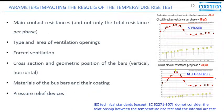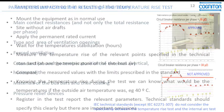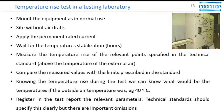Not only the total resistance per phase — which I will explain in a minute — but also the type and area of ventilation openings, whether there is forced ventilation or not, the cross-section and geometric position of the bars. Especially if the bars are in the vertical position, which I call the position of better heat dissipation, instead of horizontal, which is the position of worst dissipation. Also considered are the materials of the bus bars, and whether the bus bars and contacts are coated or not.